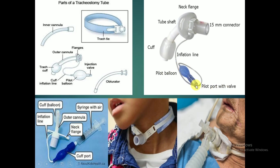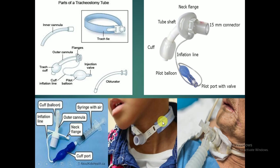With the valve, through this opening we can insert air into the pilot balloon, and it will help in inflating the cuff. There is a 15 mm connector which helps to connect the tracheostomy tube with the ventilator. The neck flange has two openings — you can see these openings in the neck flange — which help to tie a rope around the neck to prevent displacement of the tracheostomy tube.